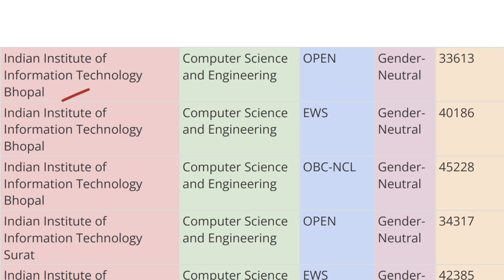Moving ahead, we have IIIT Bhopal. For Open category the cutoff rank is 33,613, for EWS category the cutoff rank is 40,186, and for OBC-CL the cutoff rank is 45,228.